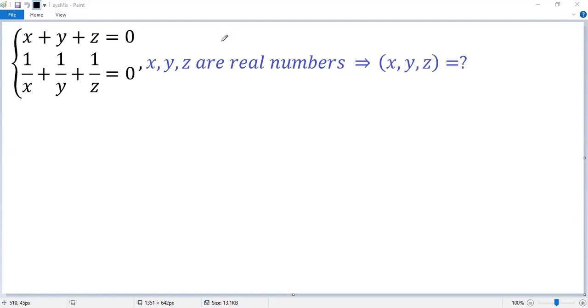The given system is interesting because there are three variables but only two equations. Let's denote this one as equation 1 and this as equation 2.